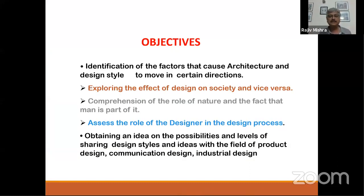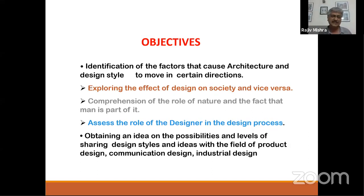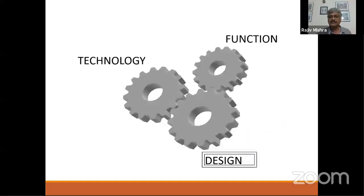My objective today is to let you know the factors that have caused architecture and design style to move in a certain direction. There is architecture of life, architecture of everything that we do, and it is design that puts in a very important wheel for it to move in a certain direction. We will look at the effect of design on society and then the effect of society on design. We will also talk about the role of nature and assess the role of the designer, and then obtain an idea on the possibilities and levels of sharing design styles, covering product design, communication design, and industrial design.